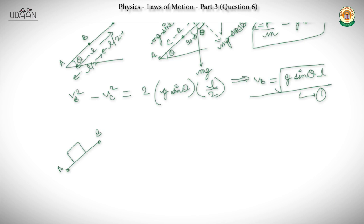Because the relative motion is in the downward direction along the plane, the friction acts in the opposite direction — upward along the plane. We always remember that friction opposes the motion of the body, and that's why we take it in the opposite direction.